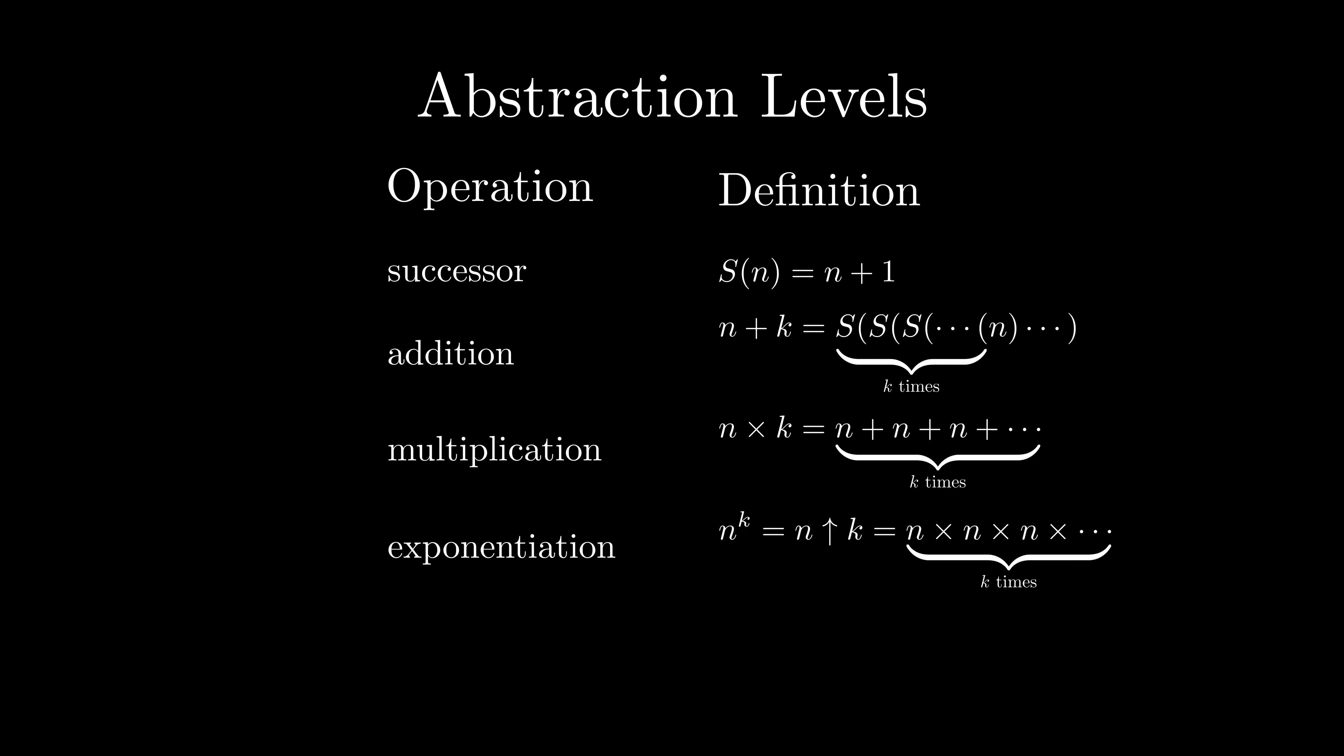So we mentioned that exponentiation travels further than multiplication, which travels further than addition. But why is this? Here we look at levels of abstraction. Let's define a successor operation as outputting the number that comes next. If we repeat the successor operation n times, it is the same as adding n. Therefore, the addition operation is just repeated succession. If we repeat adding the same value n times, we are multiplying by n. Multiplying is just repeated addition. And finally, similarly, exponentiation is repeated multiplication.